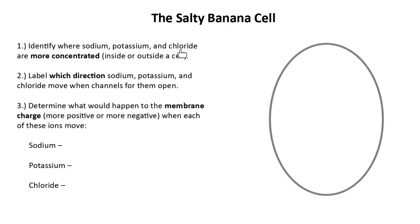Before I start labeling where we've got a lot of each of these things, can my friends in class help me out in the chat? Which of these — sodium, potassium, or chloride — is what we would call a cation? That's another unit one word.